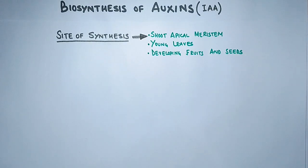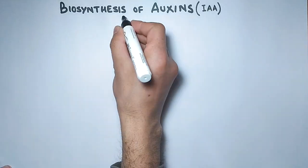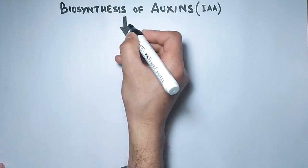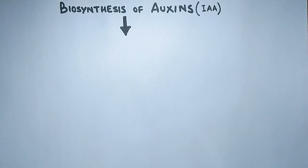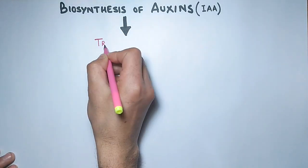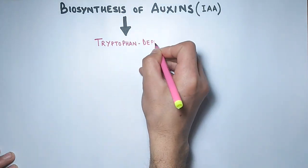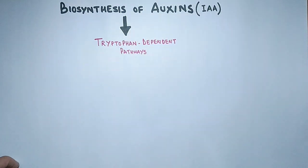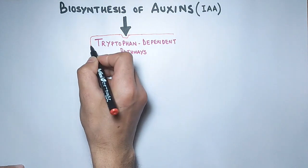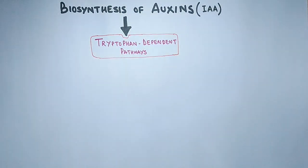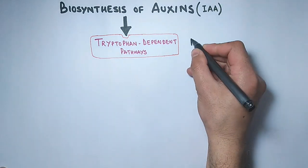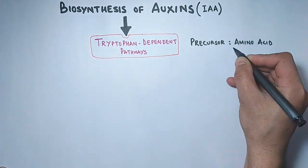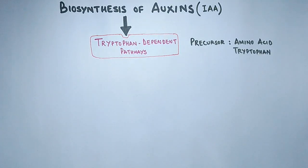Now let's look in detail at the synthesis of the auxin hormone. We will discuss the tryptophan-dependent pathway, in which the amino acid tryptophan acts as the precursor molecule for auxin.